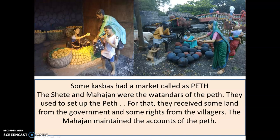Certain Kasbas had markets which were called as Pates — a Pate is a market. The Shete and the Mahajan were the vatandars of the Pate; their job was to set up the Pate, for which they would receive some land from the government. They also maintained the market with support from villagers. The Mahajan maintained records of the accounts of the Pate, just as the Kulkarni maintained records of land revenue. In the pictures, one woman is selling fruit and a man is selling pots — grain and daily-use articles were all sold at the Pate.